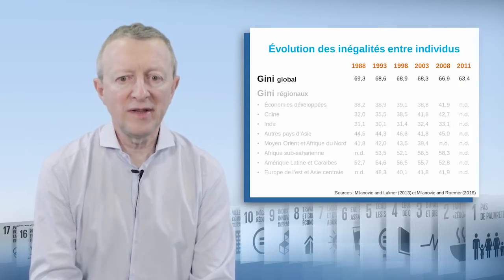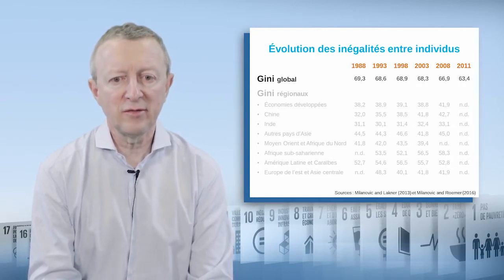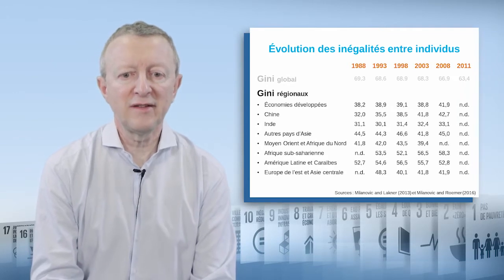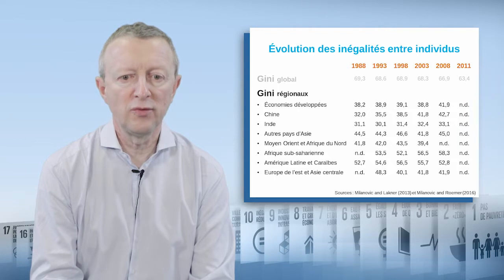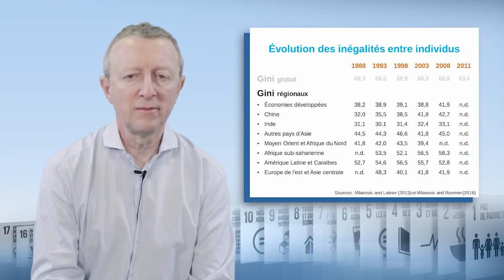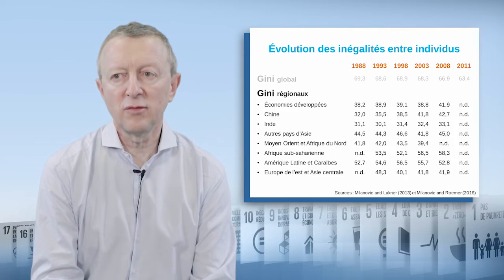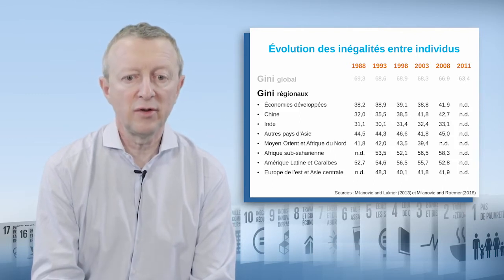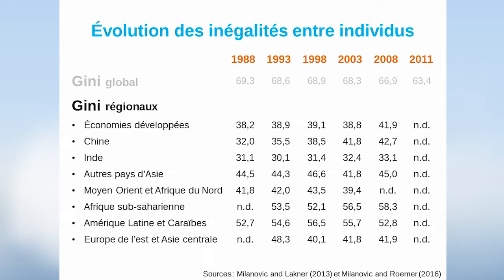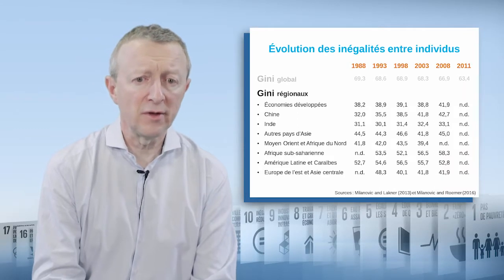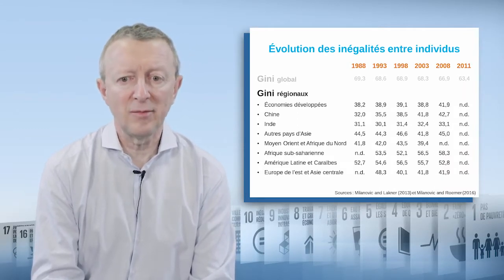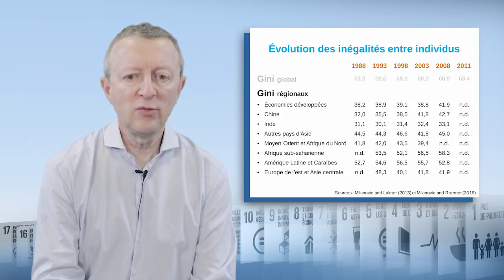This drop in global inequality also came with an increase of inequalities within individual countries. The most spectacular evolution is that of China, where the Gini gained more than 10 points between 1988 and 2008, which is considerable. Inequalities also increased a lot in Sub-Saharan Africa, but dropped in the countries of the former Soviet bloc. The living standards in China increased considerably, and the average Chinese person moved from the bottom of the scale to the middle, which largely explains the stagnation then decrease of inequalities on the global level.